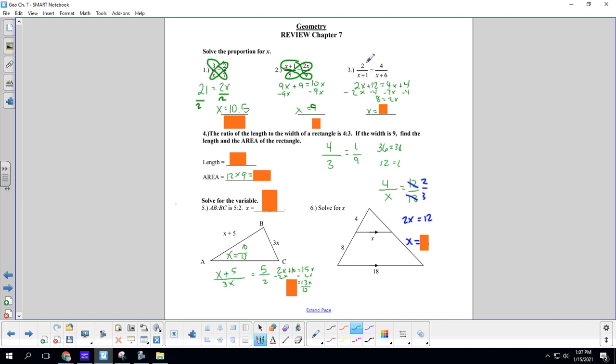One more time, just for fun. 2 times x plus 6 gives us 2x plus 12. And then x plus 1 times 4 gives us 4x plus 4. We subtract 2x from both sides to get 2x, and 4 from both sides to get 8. Divide both sides by 2, and that gives us a 4.